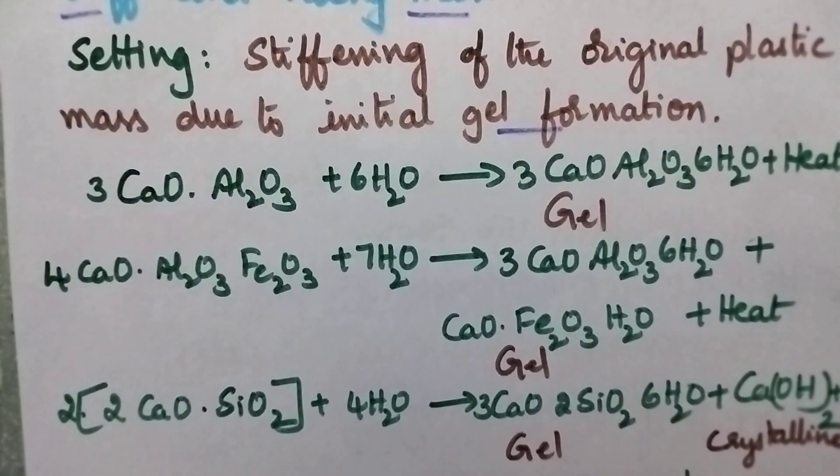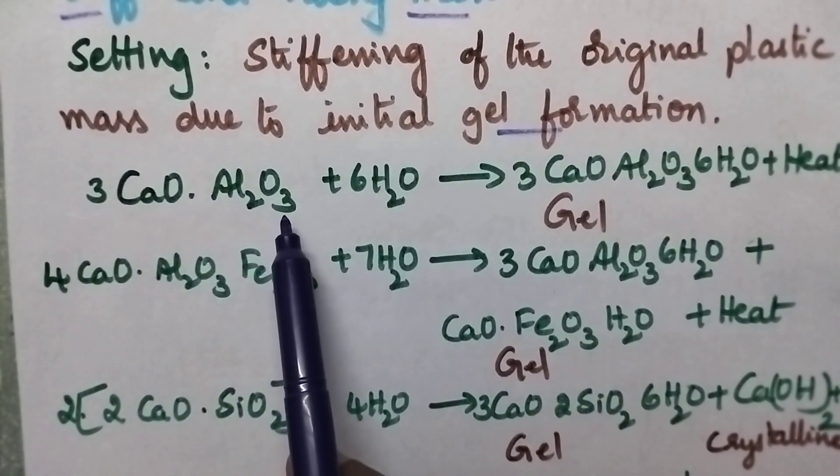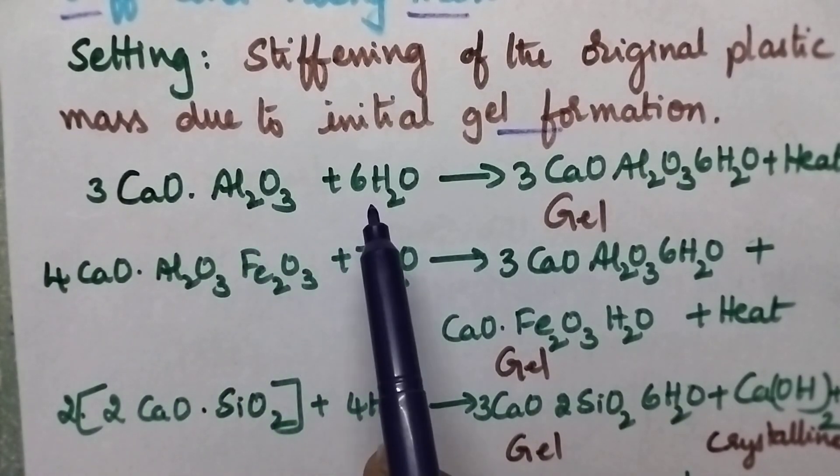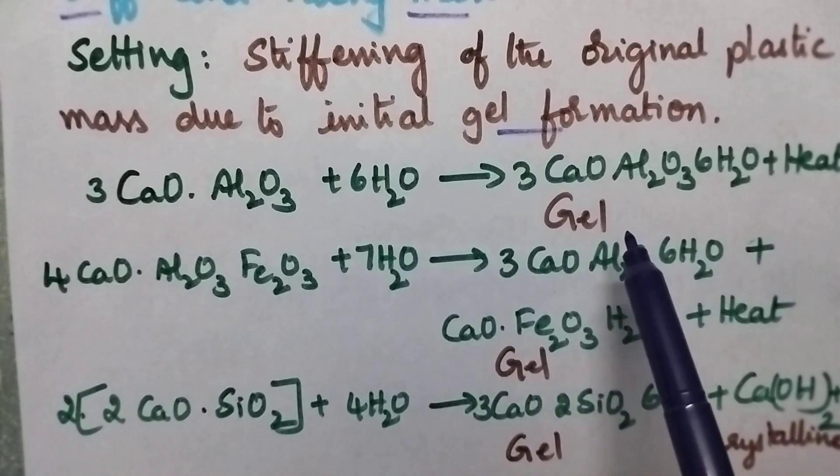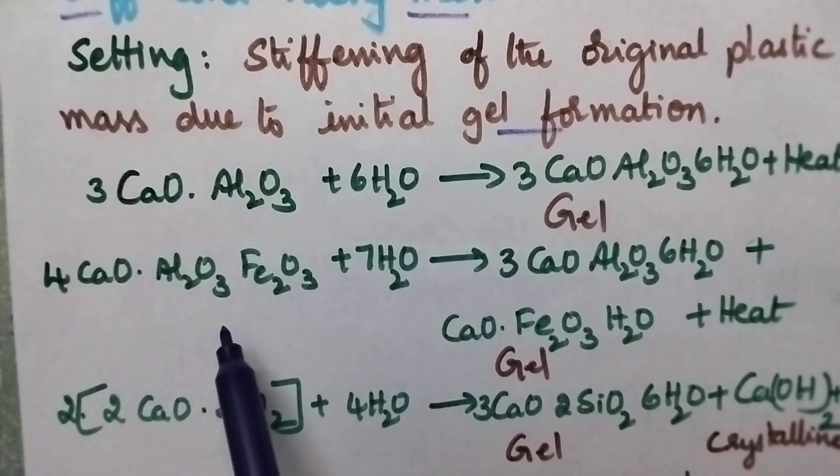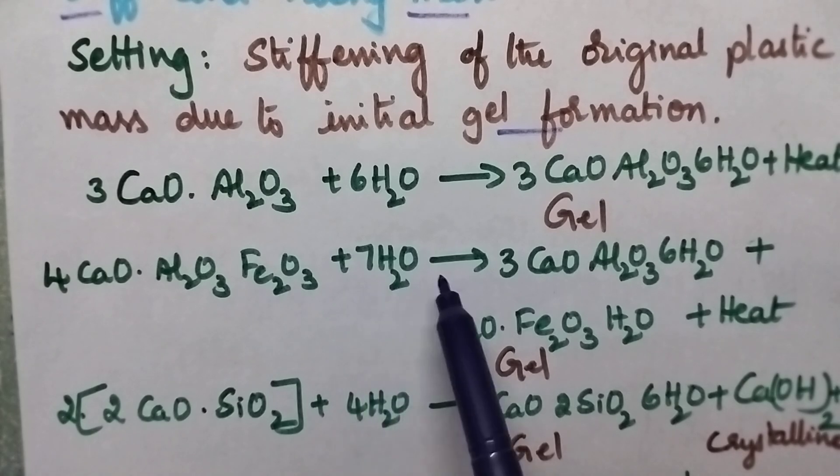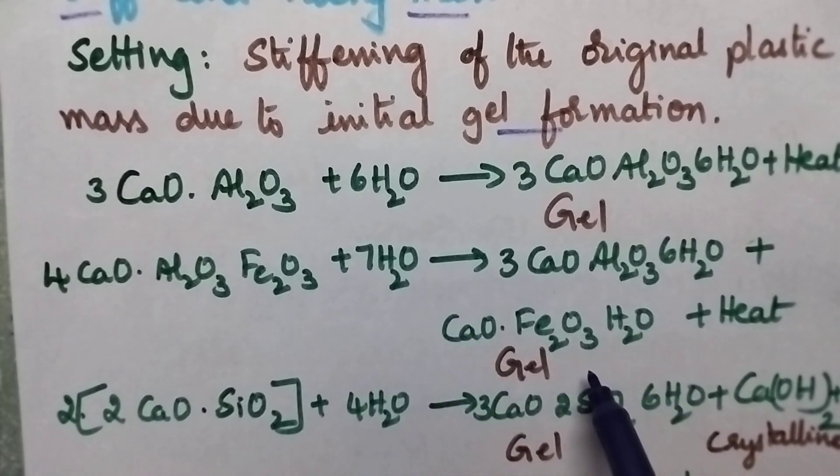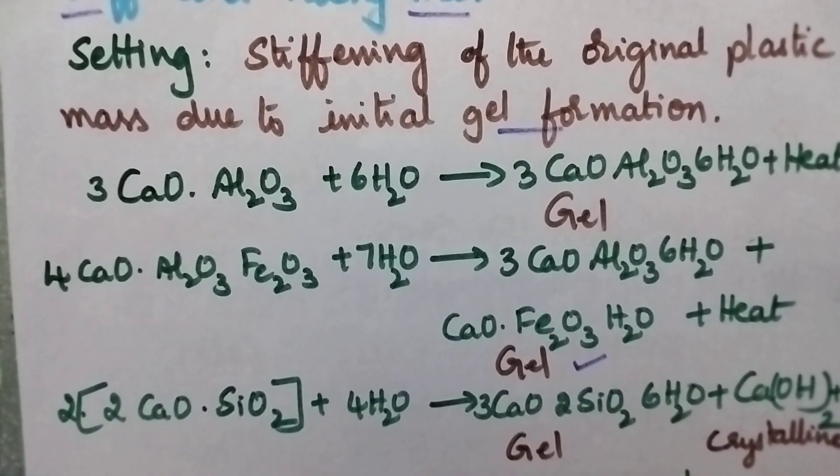So whenever we consider calcium aluminate, it undergoes hydration and results in the formation of a gel. Similarly, calcium aluminate ferroate also undergoes hydration and results in the formation of gel-like substance.